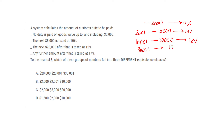Any further amount — that is 30,001 and above — is 17%.